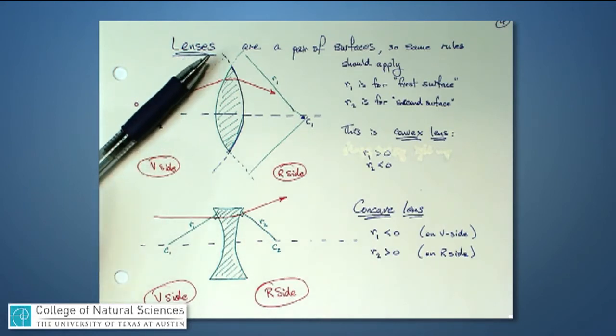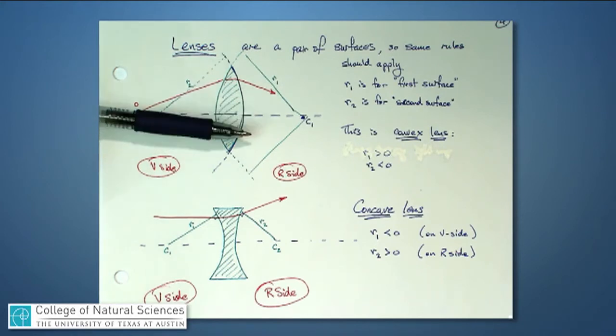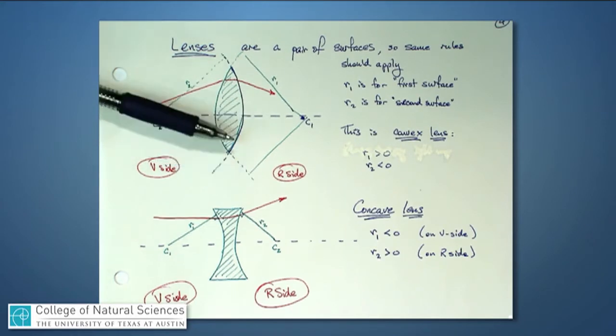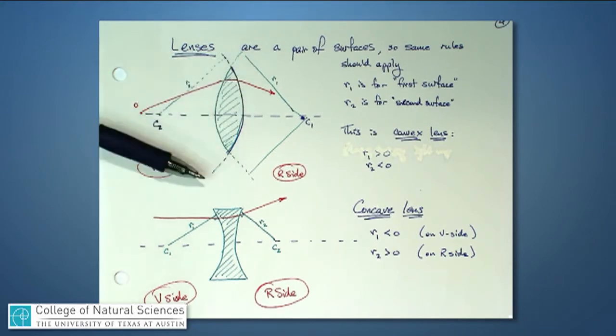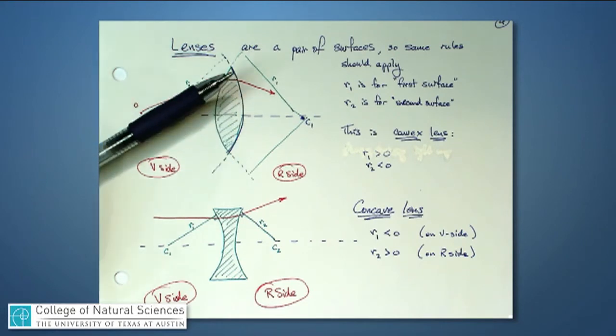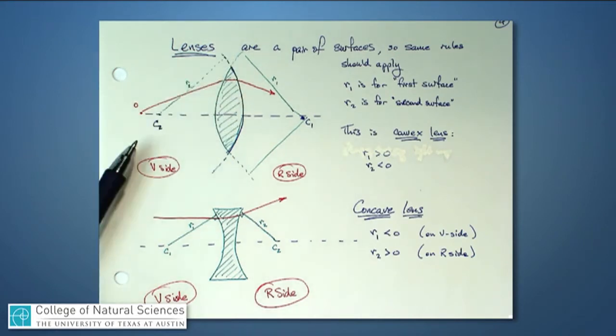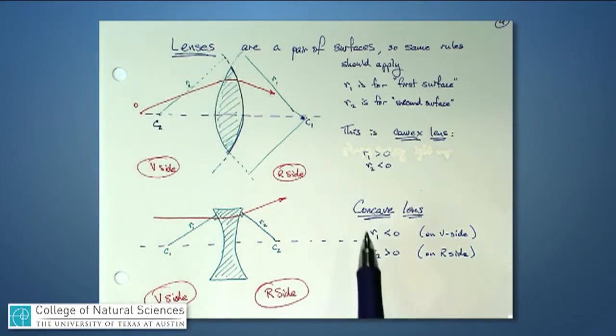And the center of curvature is that place from which we would draw a set of radii, equal radii, and sweep out the second of these two surfaces. Since C2 is on the V side, R2 is the negative number. That's the particular set of signs that would come out for a so-called convex lens, ones that bulge out like this.